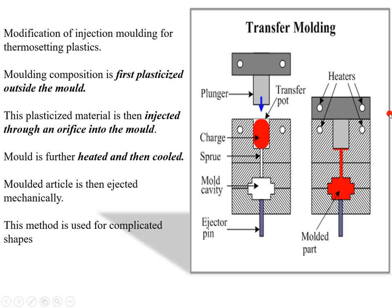Transfer molding — look at the diagram. There is an upper part and a mold cavity, the shape depending on the plastic you want. This is a modification of injection molding. There is a channel through which the plastic can go into the mold. In transfer molding, the plastic is first softened outside and then placed in the mold. Through pressure, the softened plastic is injected through an orifice into the mold, where heating and cooling take place. Once the shape is formed, it is cooled and the molded article is ejected mechanically. This process is used for preparing complicated shapes of plastic.